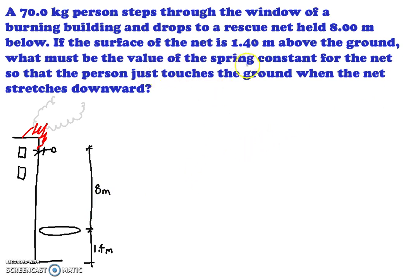Now, what must be the value of the spring constant for the net? So we're assuming the net is a spring. We're treating it like a spring because it has a spring constant. And the person just touches the ground when the net stretches downward. So he's going to fall into the net, and the net's going to go down to the bottom. So I know that the distance that the spring is stretched is 1.4 meters. That's the whole point.